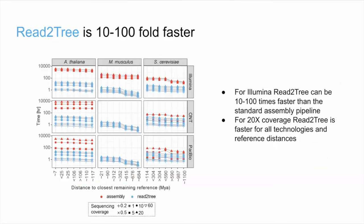We also set ourselves out to show that the simpler process is faster. In a direct comparison between different technologies and datasets, Read2Tree is around 10 to 100-fold faster. For most technologies, and specifically for 20x coverage, we are nearly always faster in producing phylogenetic trees.